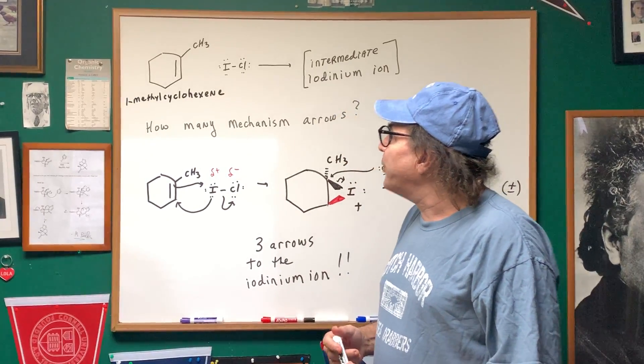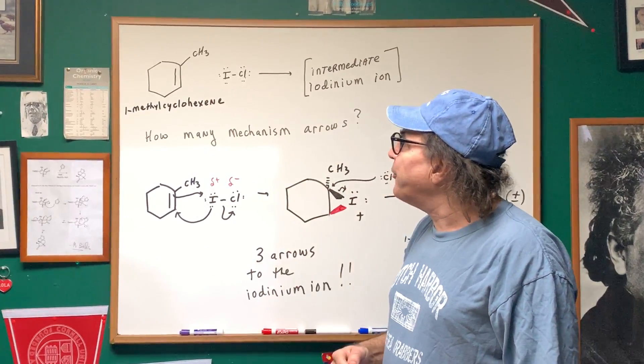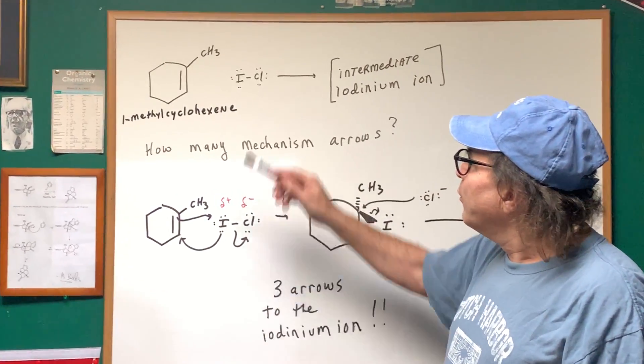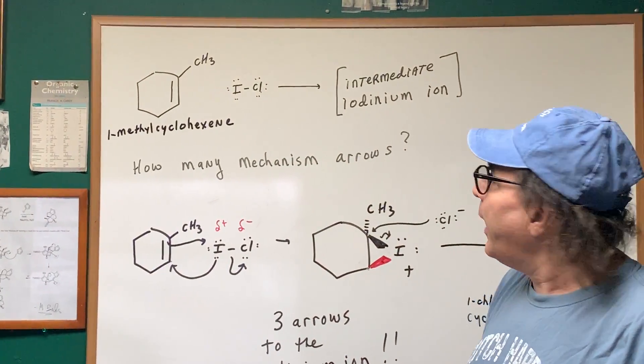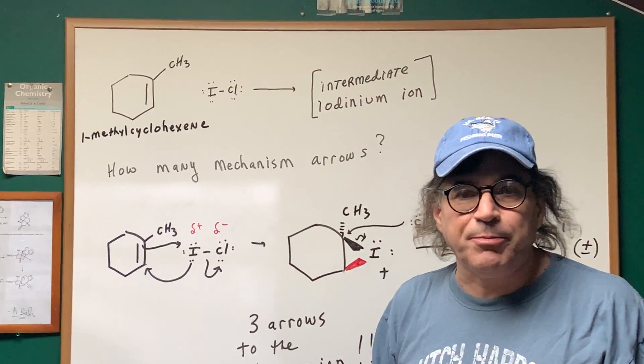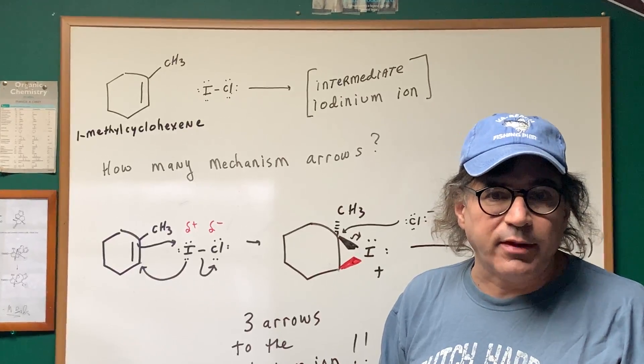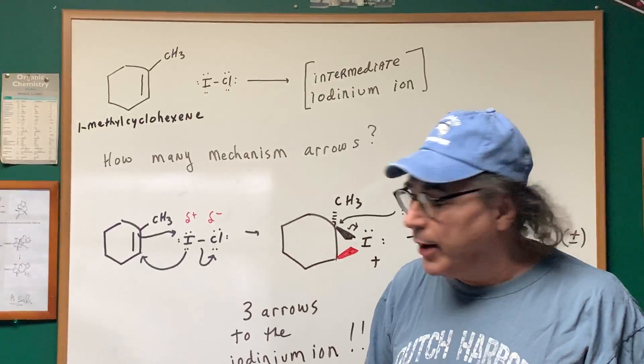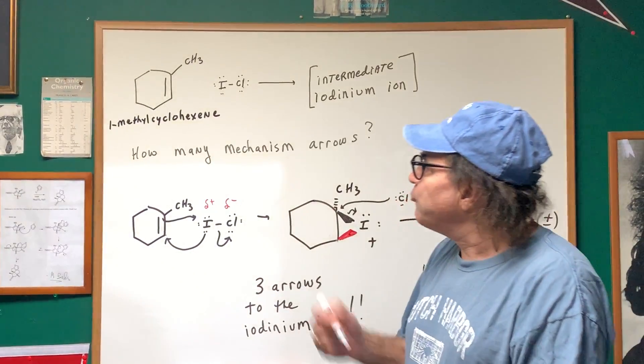What the problem involved was treating one methylcyclohexene with iodine chloride. And I wanted to simply know how many mechanism arrows could be drawn to form the intermediate iodinium ion. Very simple. Let's draw it.